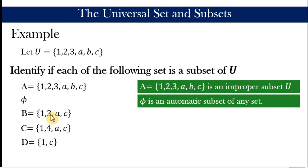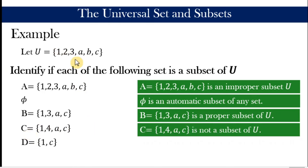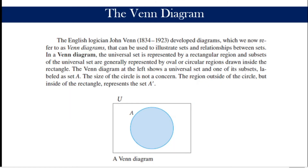Set B contains one, three, A, and C. Checking each element — one, three, A, C are all found in the universal set, so B is a proper subset of U. They are not equal, since there are elements in U not in B. Set C contains one, four, A, and C — but four is not an element of the universal set, so C is not a subset. Set D contains one and C, both of which are in the universal set, so D is a proper subset.